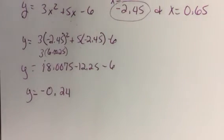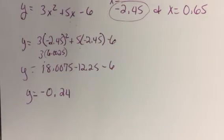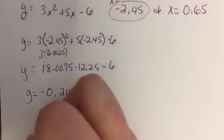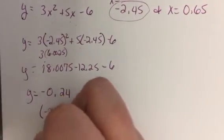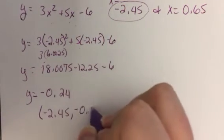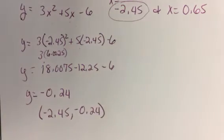So 18.0075 minus 12.25 minus 6 gives me y equals negative 0.24. Okay, and we can round it to that. So our first point of intersection is going to be where x is negative 2.45 and y is negative 0.24-ish. Okay.